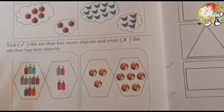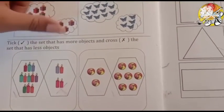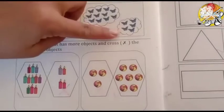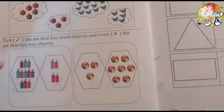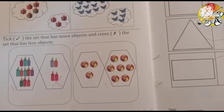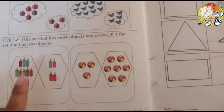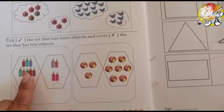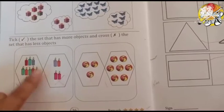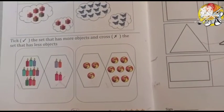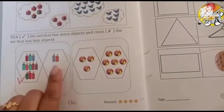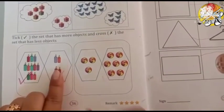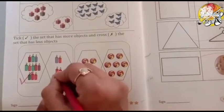Now kids, activity time. Tick the set that has more objects and cross the set that has less objects. Now find out. In this box, so many candles are here, so this is more candles. So we tick on it like this. And in this box, less candles are there, so cross on it like this.